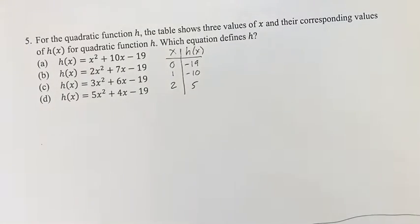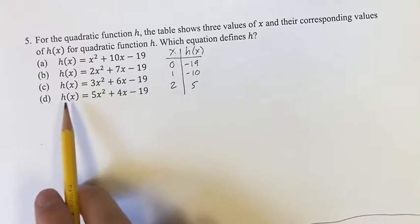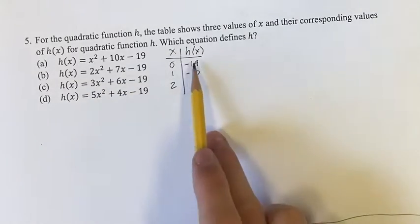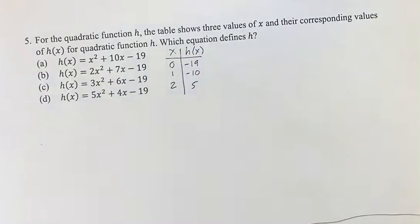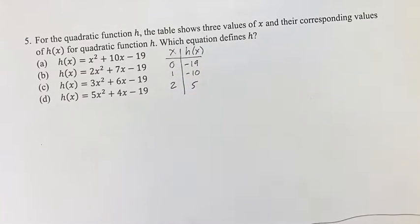Hello and welcome back to another video. In this problem we have four quadratic functions under h(x), and we're looking to see which one lines up with these three values: h(0) is -19, h(1) is -10, and h(2) is 5.